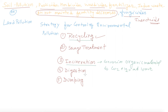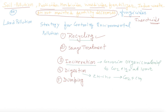Then there is digestion. It is the process of degradation of waste by microorganisms in the absence of oxygen, also called anaerobic digestion. For example, CHO gives CO₂ and methane. Then controlled dumping of waste in the oceans and soil is also a useful practice.